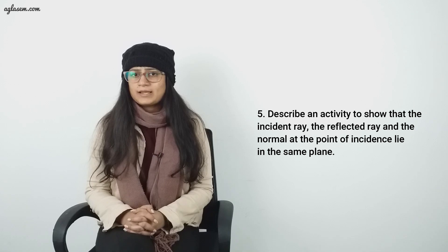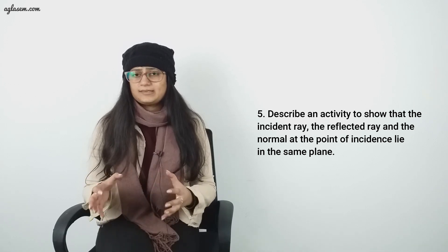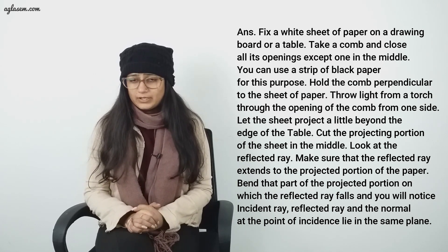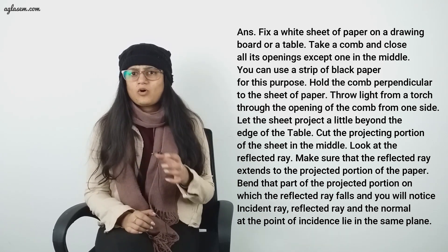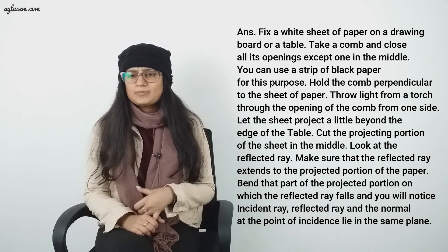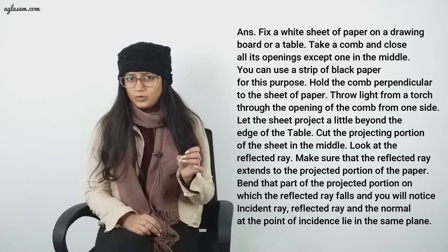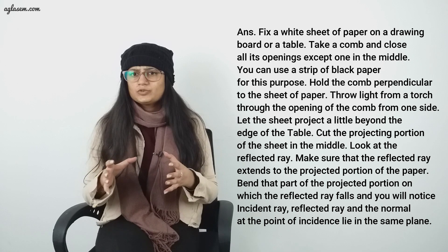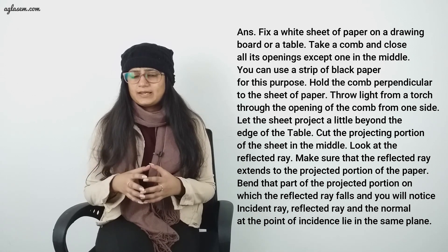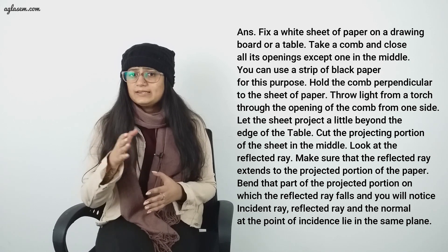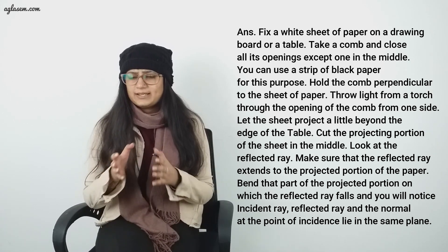Question number 5: Describe an activity to show that the incident ray, the reflected ray, and the normal at the point of incidence lie in the same plane. Answer: Fix a white sheet of paper on a drawing board or a table. Take a comb and close all its openings except one in the middle. You can use a strip of black paper for this purpose. Hold the comb perpendicular to the sheet of paper. Throw light from a torch through the opening of the comb from one side. Let the sheet project a little beyond the edge of the table. Cut the projecting portion of the sheet in the middle.